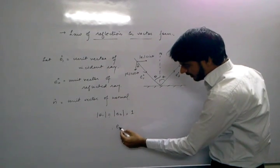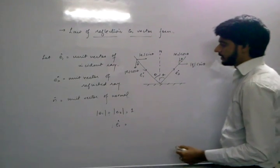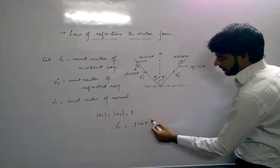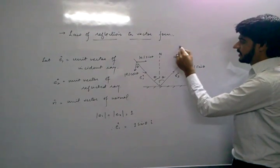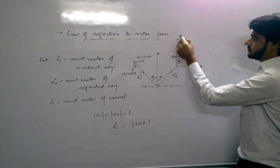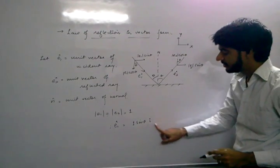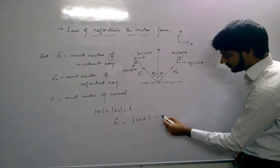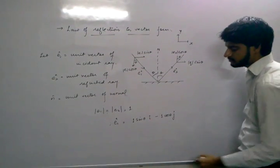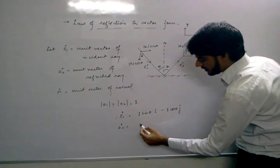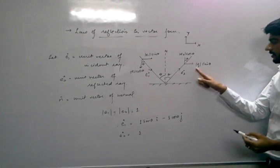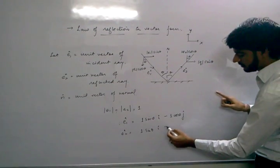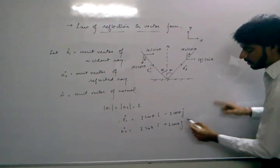Therefore, unit vector E1 can be represented as: 1·sin theta along the x-axis and 1·cos theta along the negative y-axis, so E1 = sin theta î − cos theta ĵ. Similarly, unit vector E2 can be represented as: 1·sin theta along the x-axis and plus 1·cos theta along the y-axis, so E2 = sin theta î + cos theta ĵ.